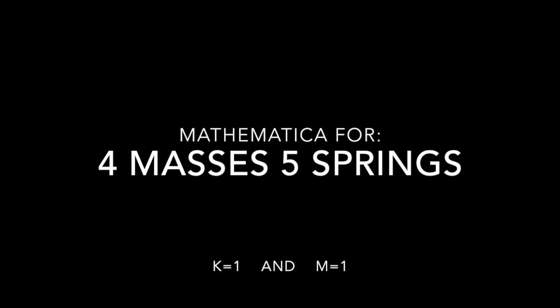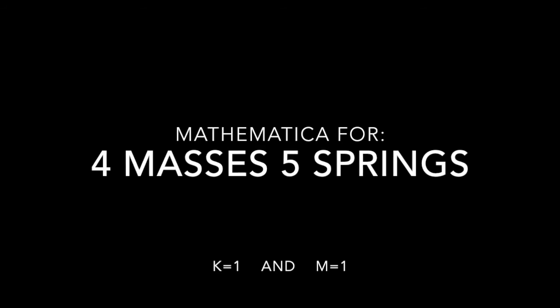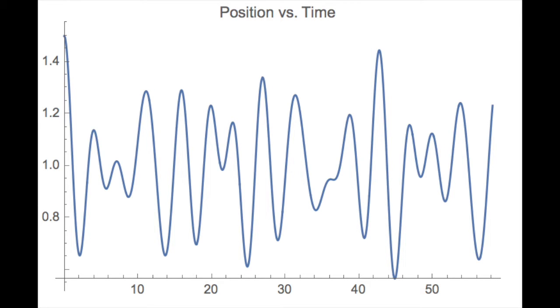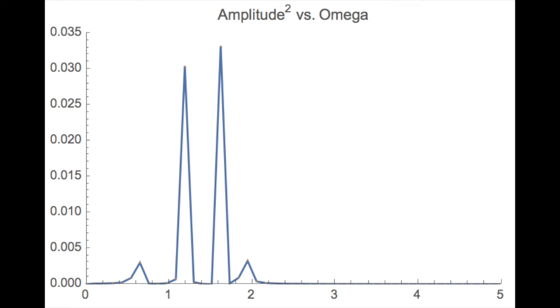We can now input these equations of motion into Mathematica. Let's set k equal to 1 and the masses equal to 1 as well. We can then get our position versus time graph and take the Fourier of the positions to get the power spectrum, just like we did for our test case. Now we see four spikes, just like we anticipated, since there are four masses.